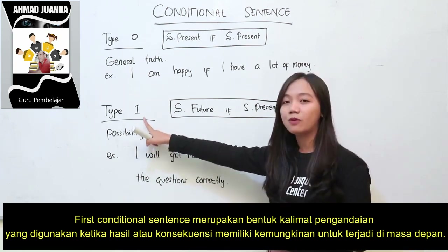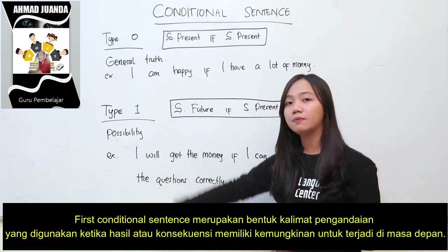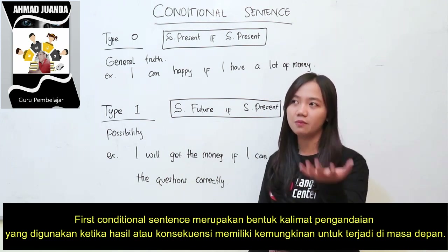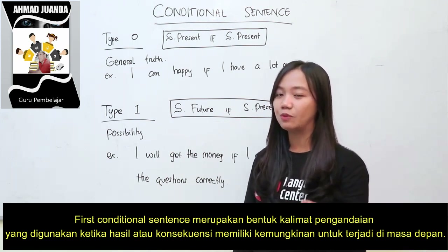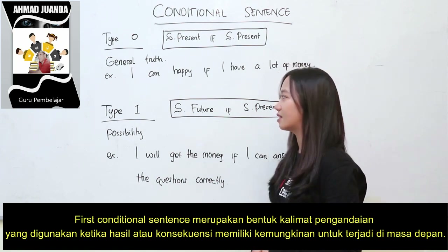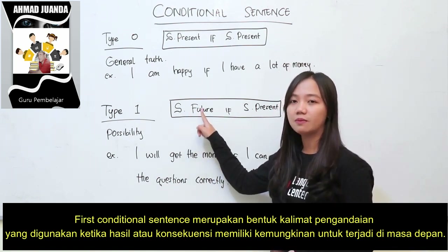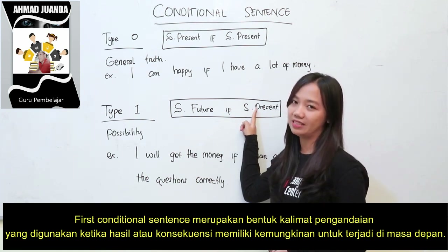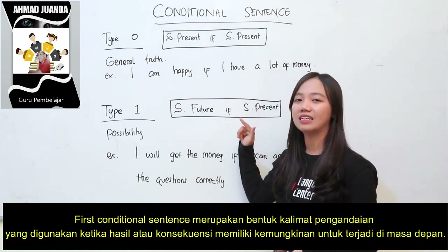Sedangkan untuk type 1, everybody, dia ini menyatakan kemungkinan — kemungkinan yang akan terjadi, bisa ya bisa enggak, ya mungkin aja. Karena dia menyatakan kemungkinan, maka tenses yang dipakai adalah simple future: simple future, if simple present. Boleh dibolak-balik, tinggal kasih koma aja di tengah nanti.